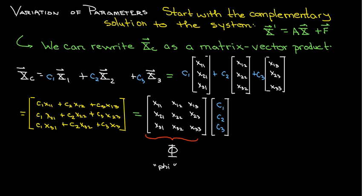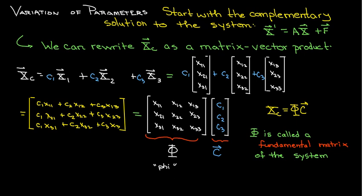The matrix, which has all the components from the solution vectors, we're going to call capital Phi or uppercase Phi. We'll use uppercase c for the vector of coefficients. This gives us a very compact way of writing the complementary solution — it's just the matrix Phi times the vector c. The matrix Phi is called a fundamental matrix of the system.